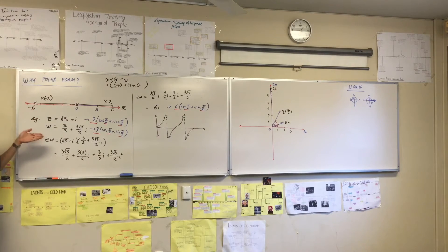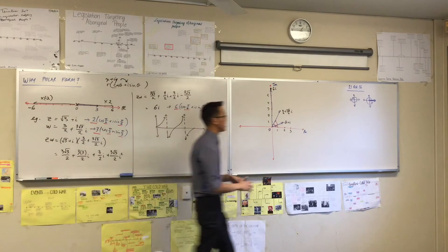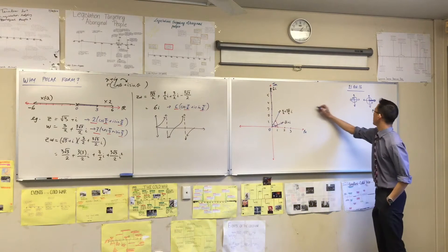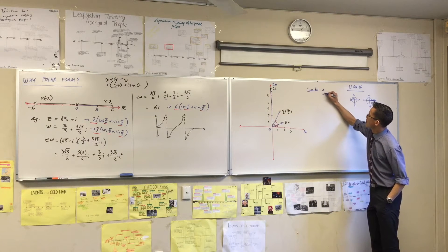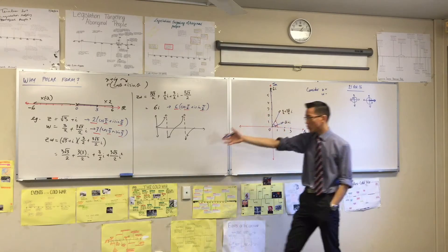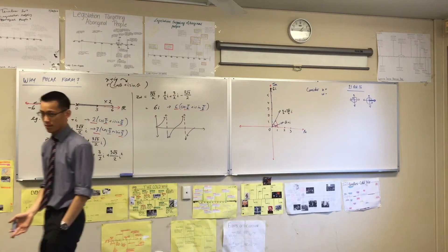So instead of this Z and this W, let's introduce a new Z and a new W. Over here, I can fit it here. Consider, instead of these which are specific, let's go as general as we can, okay?